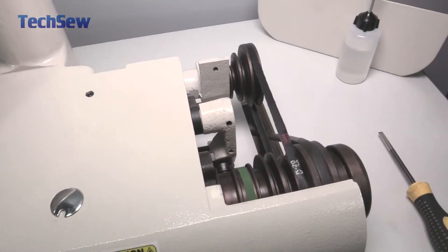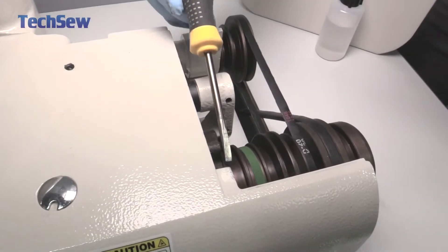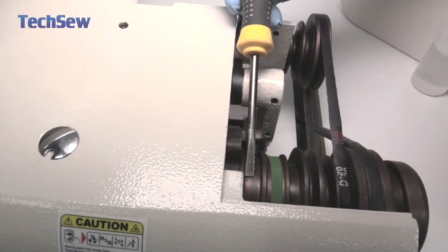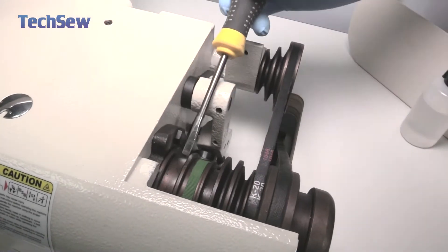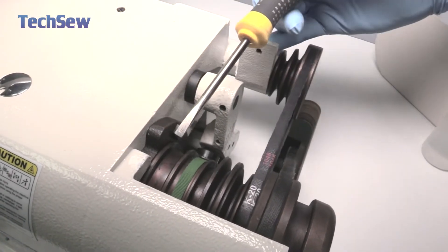Next greasing point is right here. For the slider on the conical clutch that drives the grinder wheel. You just have to add a very light layer of grease over here.